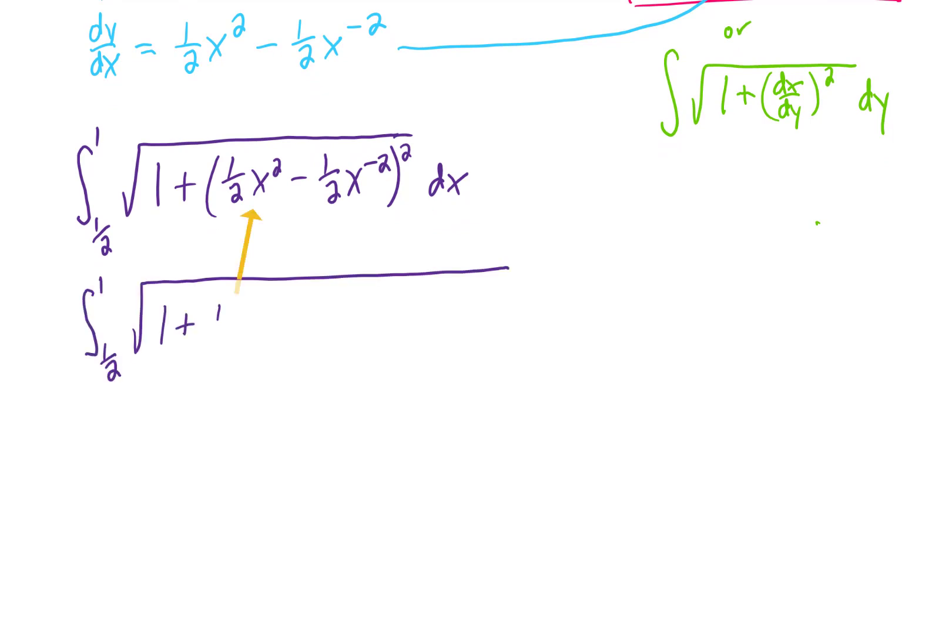Squaring this first term is just going to give us 1/4 x to the fourth. In our foiling process, we have to multiply the first and the last terms. That's going to give us a minus 1/4 because the x squared and the x to the negative 2 cancel.